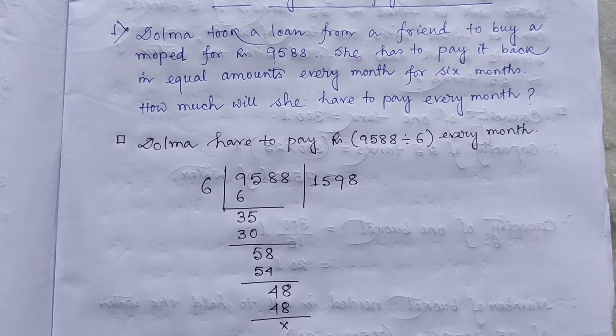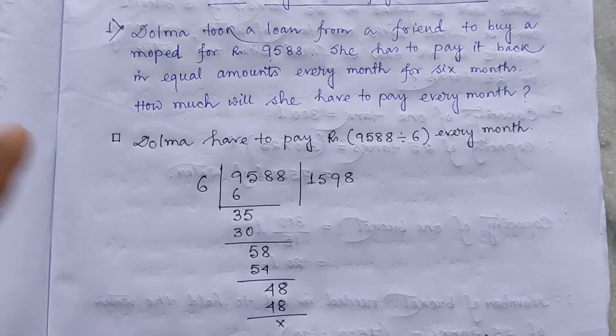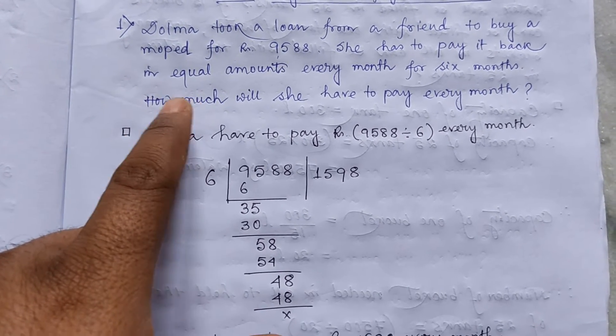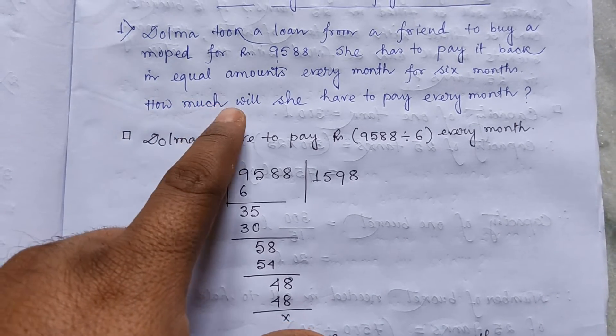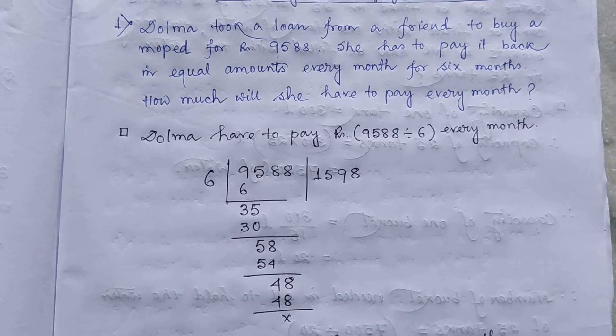How much will she have to pay every month? Here you can see it is given that she has to pay it back in equal amount. Equal amount means in this case we have to divide.